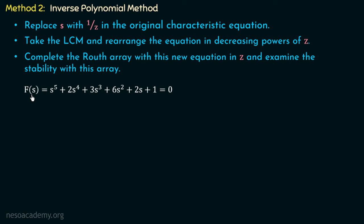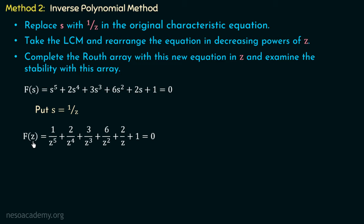Applying the inverse polynomial method to the same characteristic equation F(s) = s⁵ + 2s⁴ + 3s³ + 6s² + 2s + 1 = 0: replacing S with 1/Z gives F = 1/Z⁵ + 2/Z⁴ + 3/Z³ + 6/Z² + 2/Z + 1. Taking the LCM as Z⁵ and rearranging in decreasing powers of Z, we obtain F(Z) = Z⁵ + 2Z⁴ + 6Z³ + 3Z² + 2Z + 1 = 0.